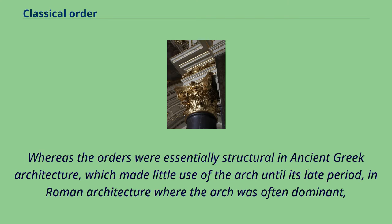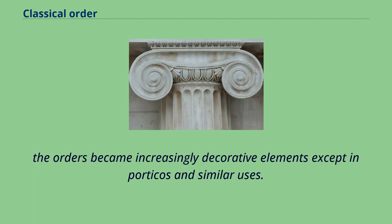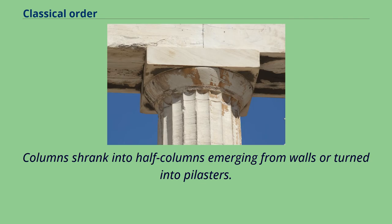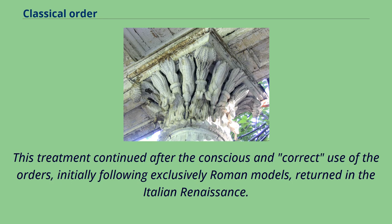Whereas the orders were essentially structural in ancient Greek architecture, which made little use of the arch until its late period, in Roman architecture where the arch was often dominant, the orders became increasingly decorative elements except in porticos and similar uses. Columns shrank into half columns emerging from walls or turned into pilasters. This treatment continued after the conscious and correct use of the orders, initially following exclusively Roman models, returned in the Italian Renaissance.